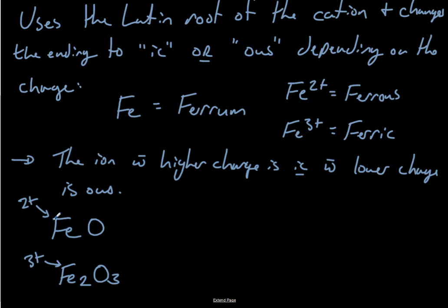Now, you know, and this is where this is a little bit trickier than the stock system. The stock system will tell you what the charge is right in the name. The classical system won't. You have to know what these charges are. So this is the lower version. So this is going to be called ferrous oxide. And this is the higher version. So it's going to be called ferric oxide.